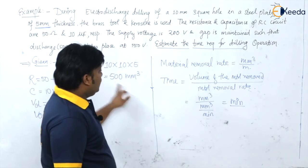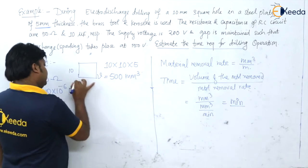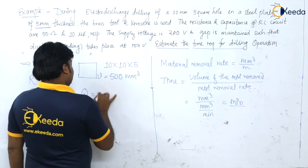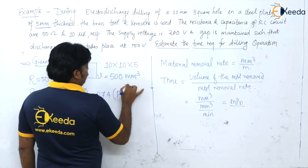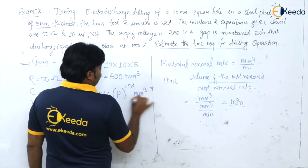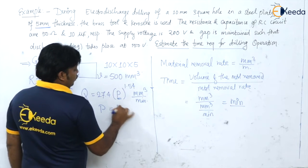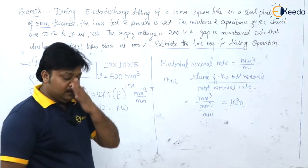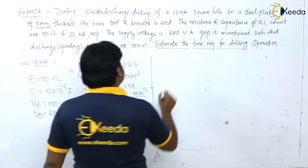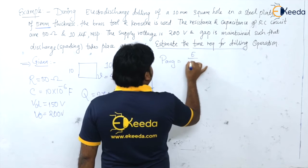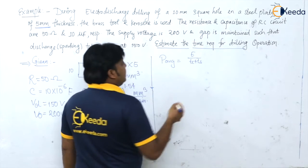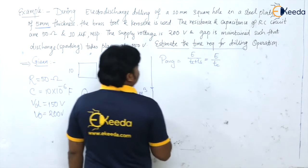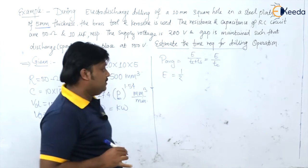We are interested in the material removal rate Q in EDM, which is given by Q = 27.4 × P^1.54 in mm³ per minute, where P is power in kilowatt. To find power, recall that P_average = E / Tc, since sparking time Ts is negligible and no data is given for it.